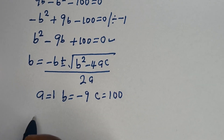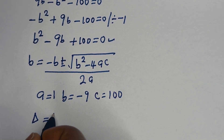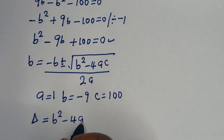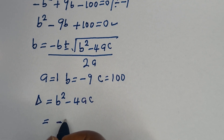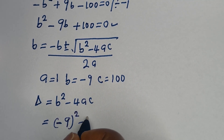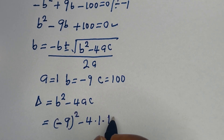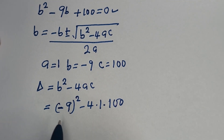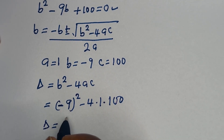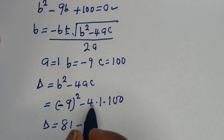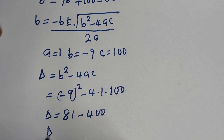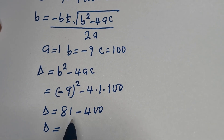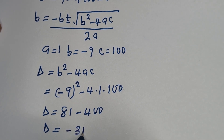From the discriminant, D is equal to b squared minus 4ac. This is equal to negative 9 squared minus 4 multiplied by 1 multiplied by 100. The discriminant is equal to negative 9 squared — that is 81 — minus 4 multiplied by 1 multiplied by 100, that is 400. So D is equal to 81 minus 400, that is negative 319.